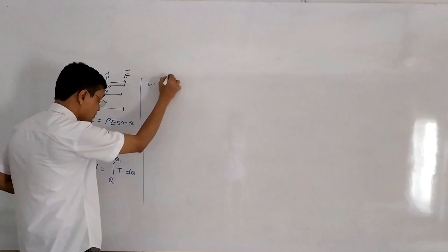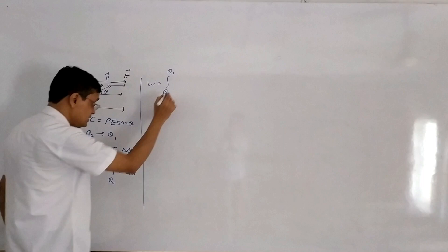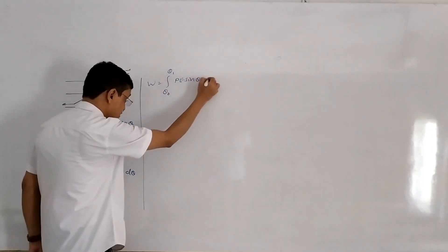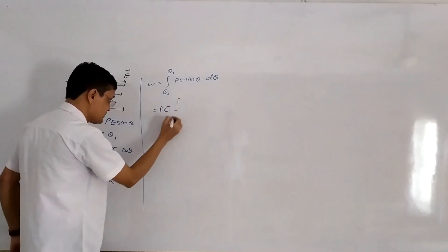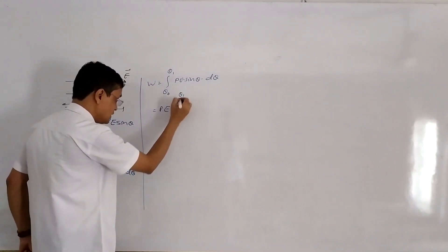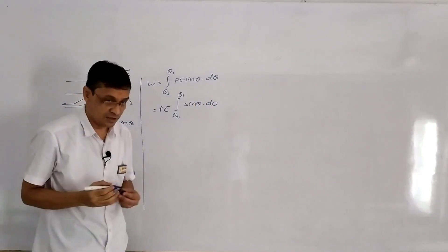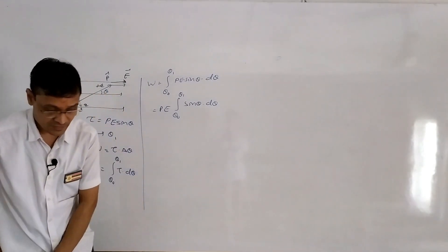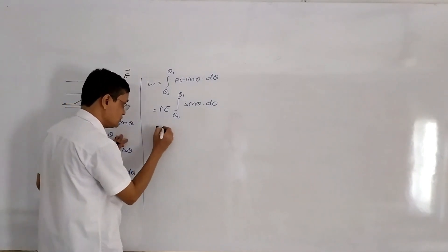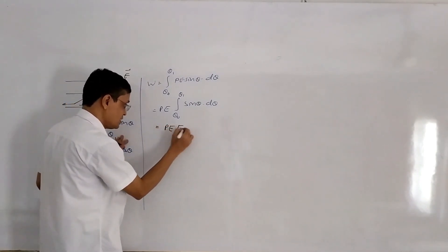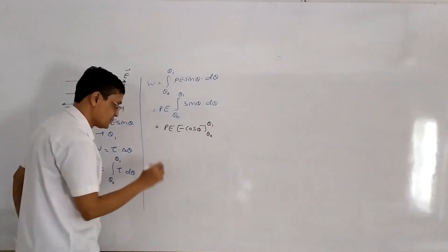Work is equal to integration from theta₀ to theta₁ of PE sin theta d theta. Since P and E remain constant, they are taken outside the integration. The integration of sin theta d theta is minus cos theta, evaluated from theta₀ to theta₁.